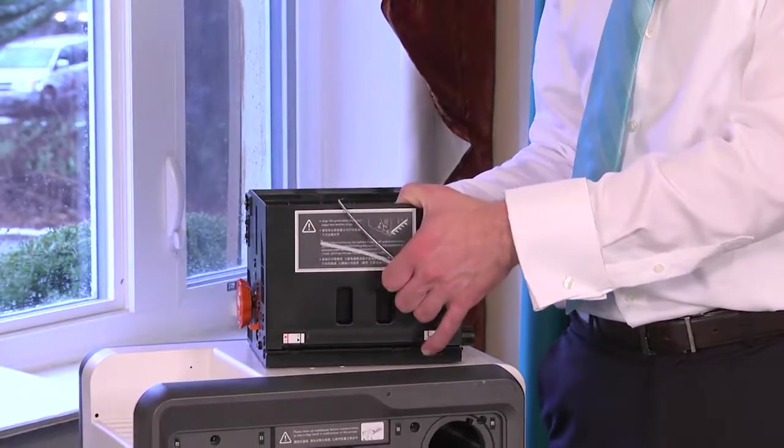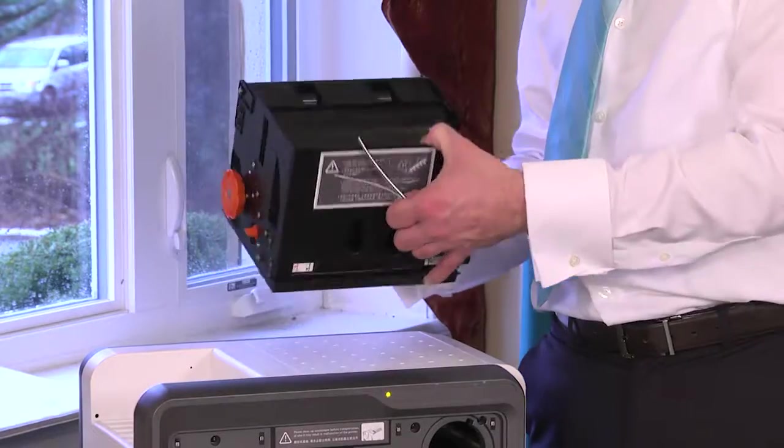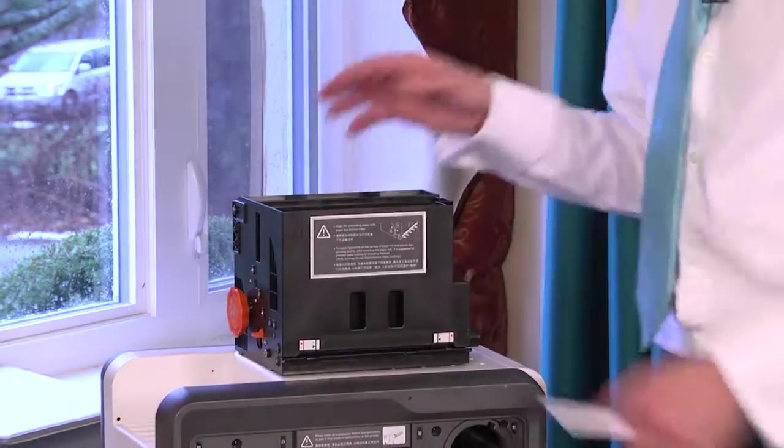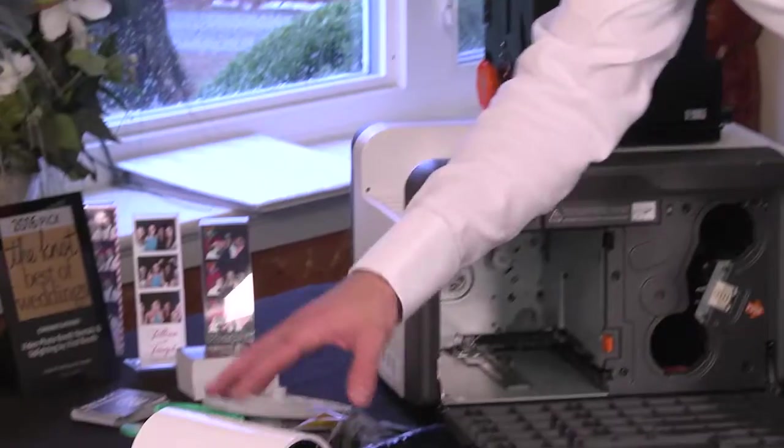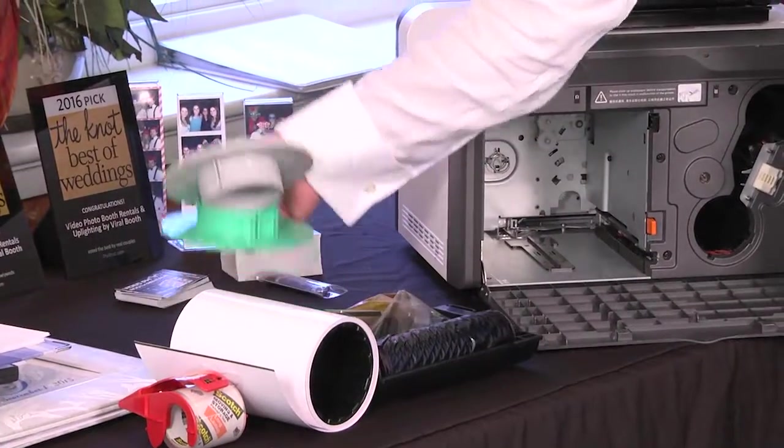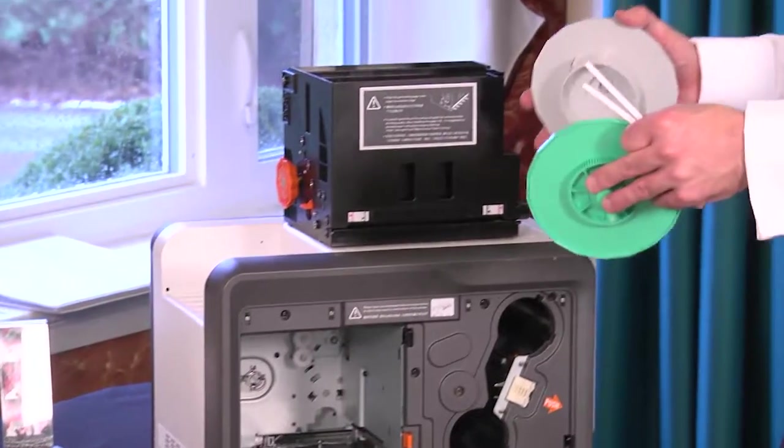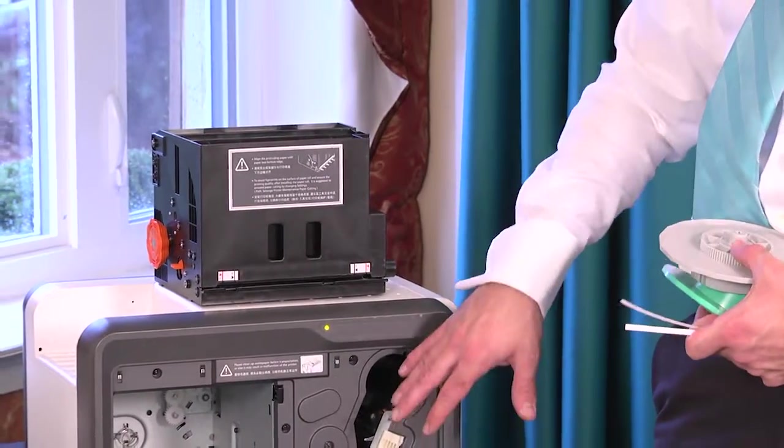So each time you change the paper at the end of each night, you want to go ahead and dump the paper out and you always take the printer paper and you take it out and you put it in the black bin. The ribbon can stay in there at all times.